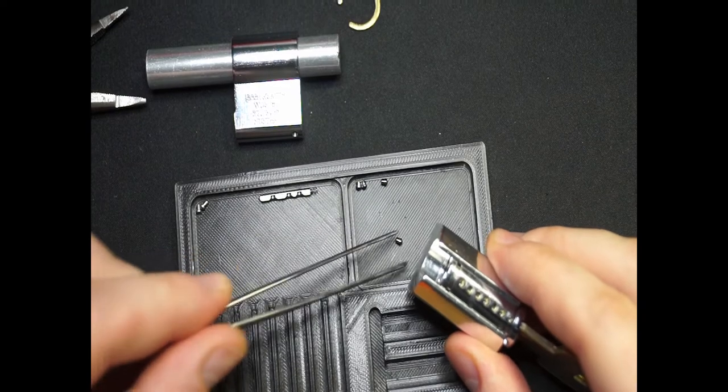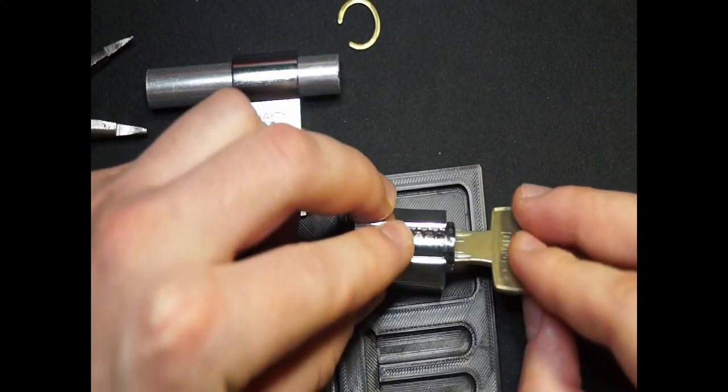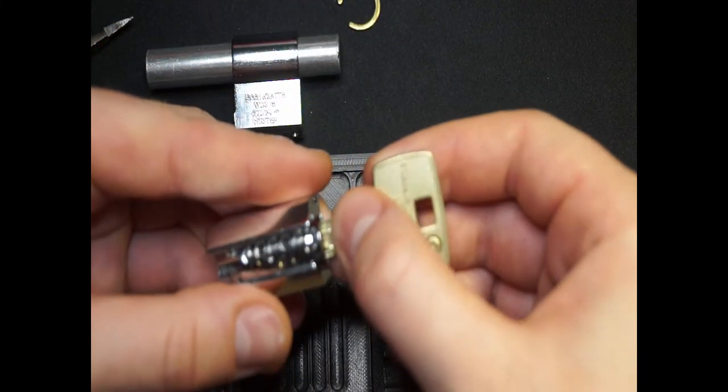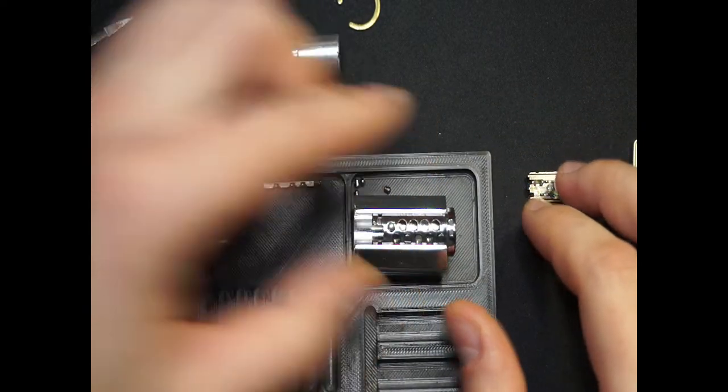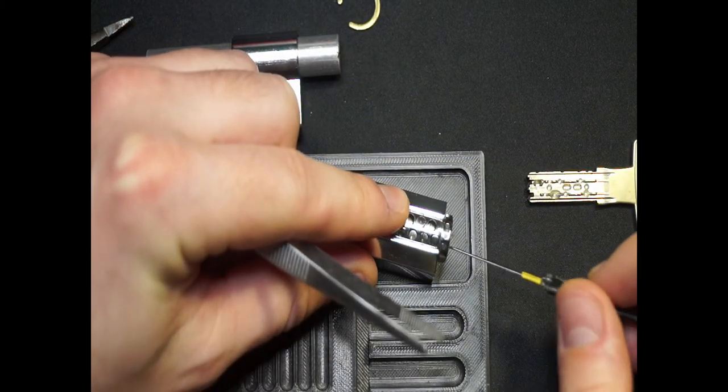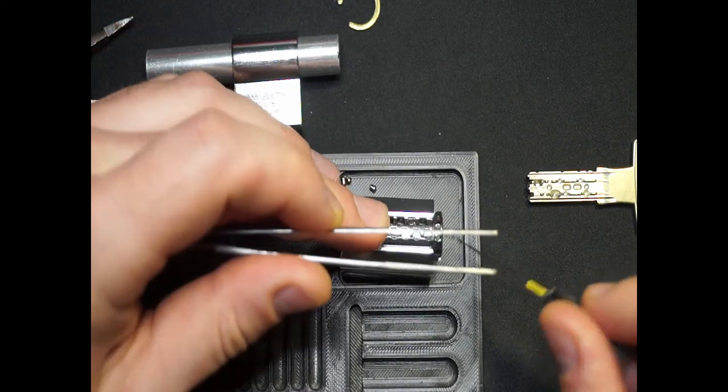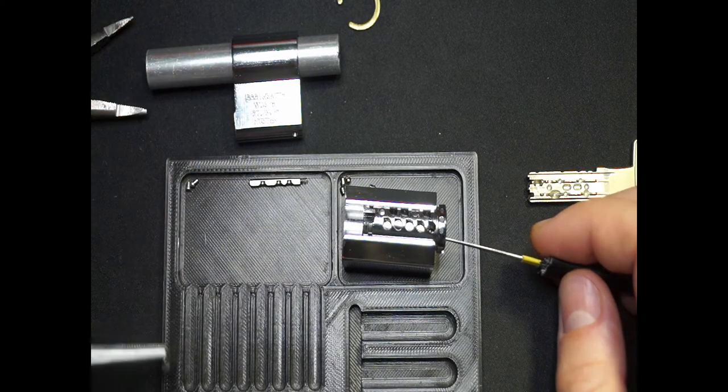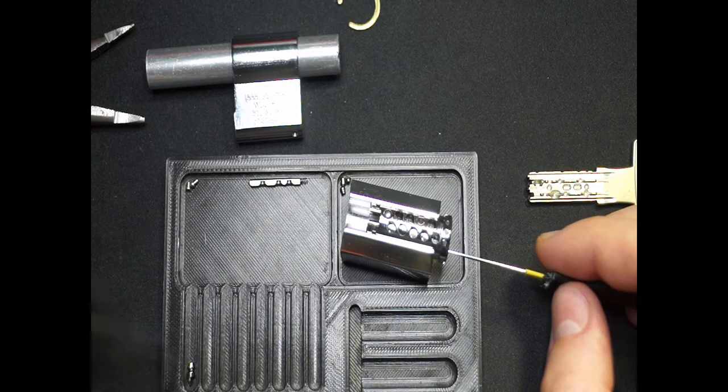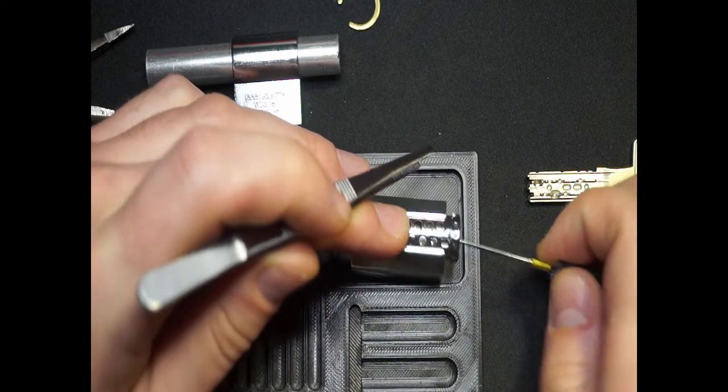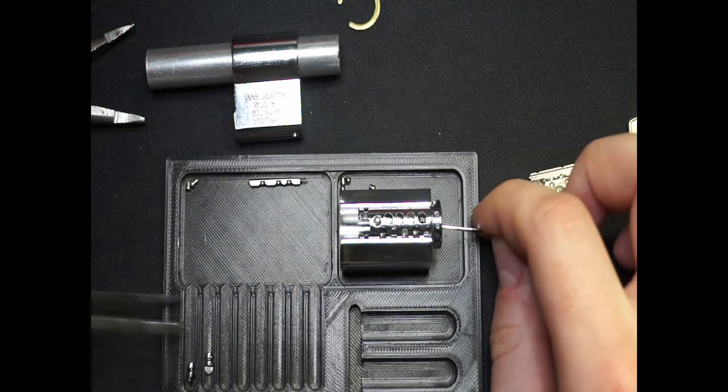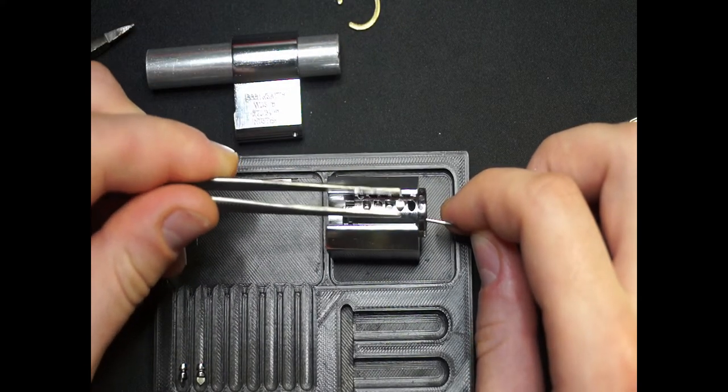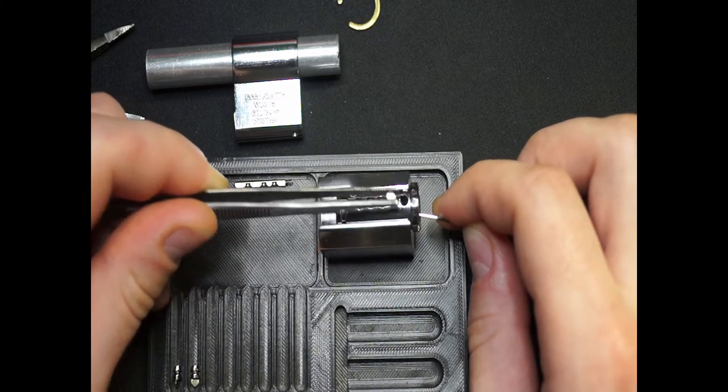Got all those. Four in total. Now let's have a look at the key pins. Just gonna try to get the key out and then just lift them out with the pin so I don't lose anything. Number one is basically almost like a mushroom pin. Number two is a mushroom pin as well.